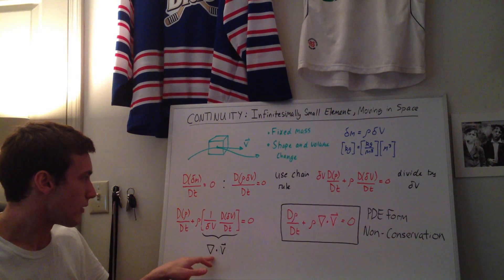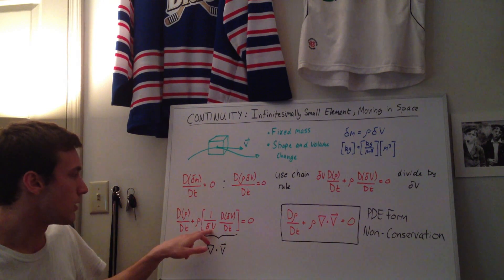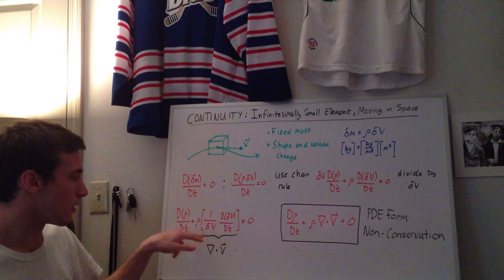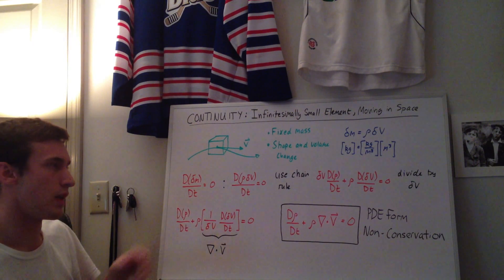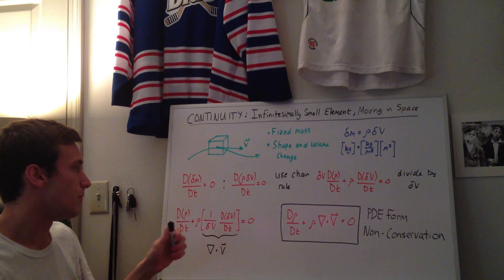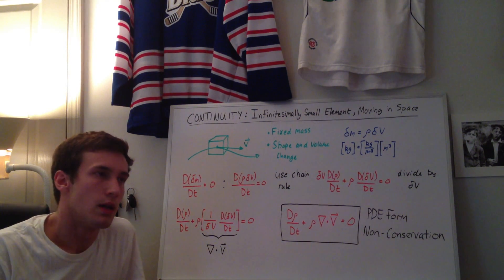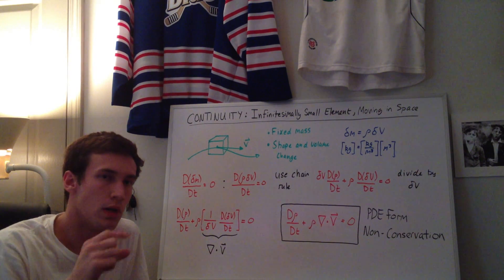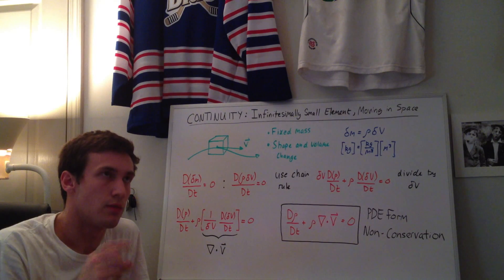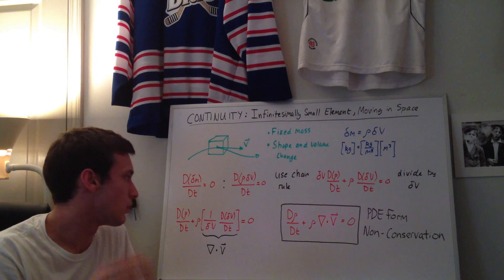The divergence of the velocity is, as you can see here, the fractional change of the fluid element. So it's the change in the fluid element per change in volume. So it's the time rate of change of the volume of the fluid element, per unit of volume.